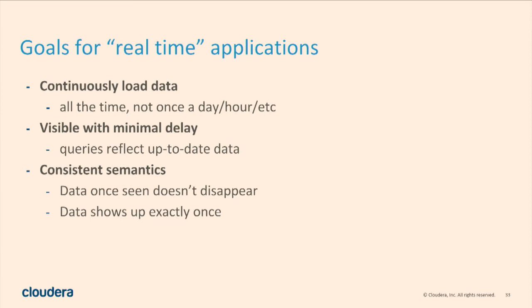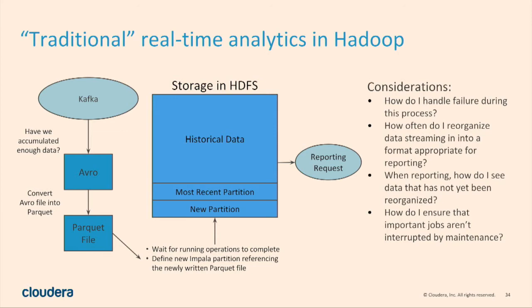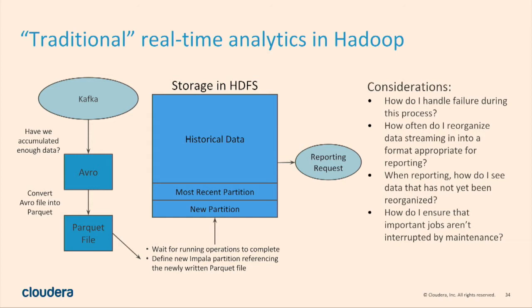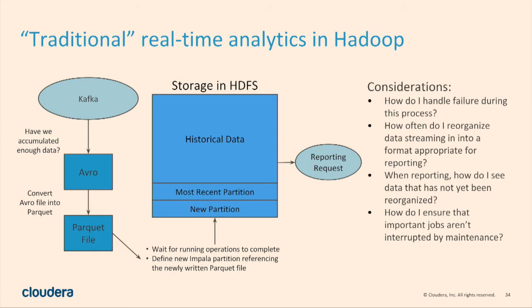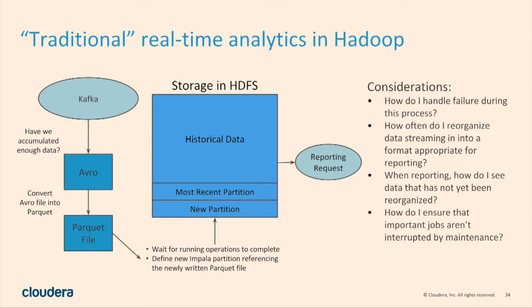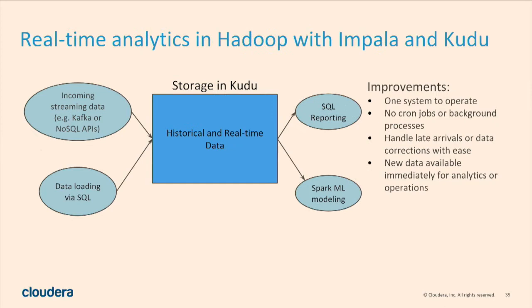Traditionally, building real-time applications on HDFS is extremely complicated — there's essentially a 27-step guide involving swapping partitions, updating metadata, creating new ones, compacting small files into large ones. Almost no one can implement this correctly without a very strong tech team, and even then it's very painful. The typical architecture involves Kafka streaming data in Avro format to HDFS, periodically compacting to Parquet, inserting new partitions into the Hive Metastore, and then compacting small partitions into big ones — resulting in high data ingest latency where new data isn't visible for another couple of minutes.